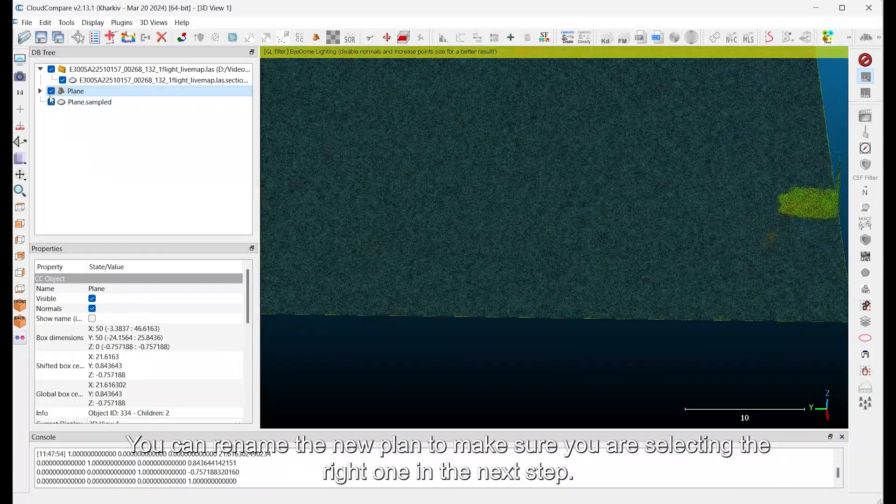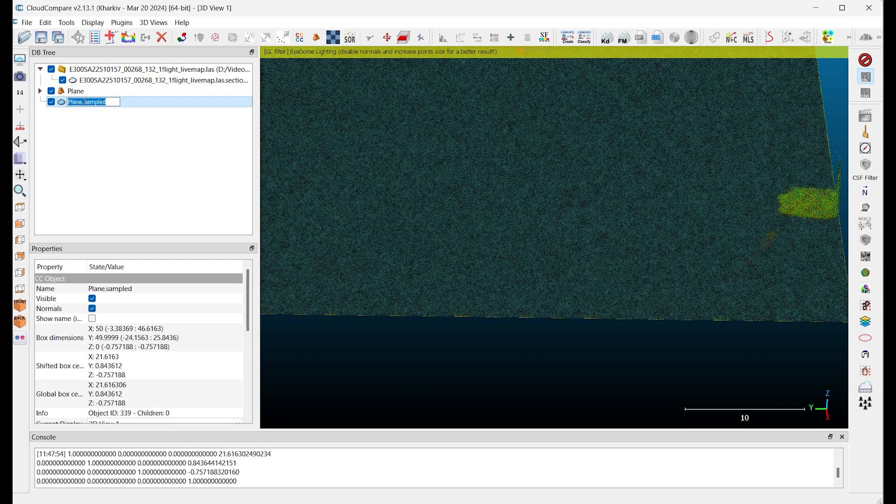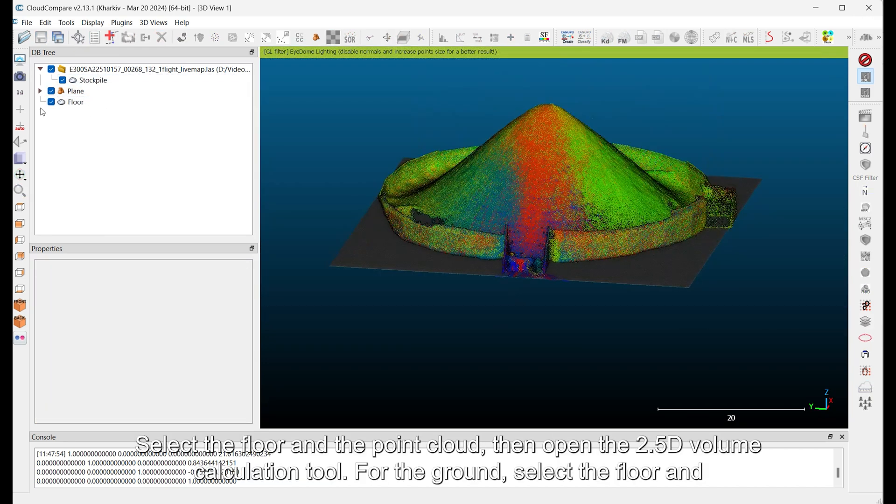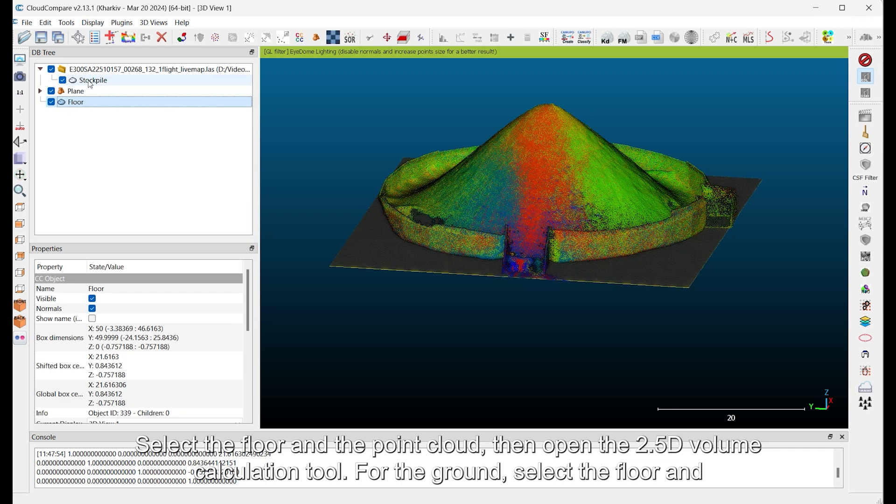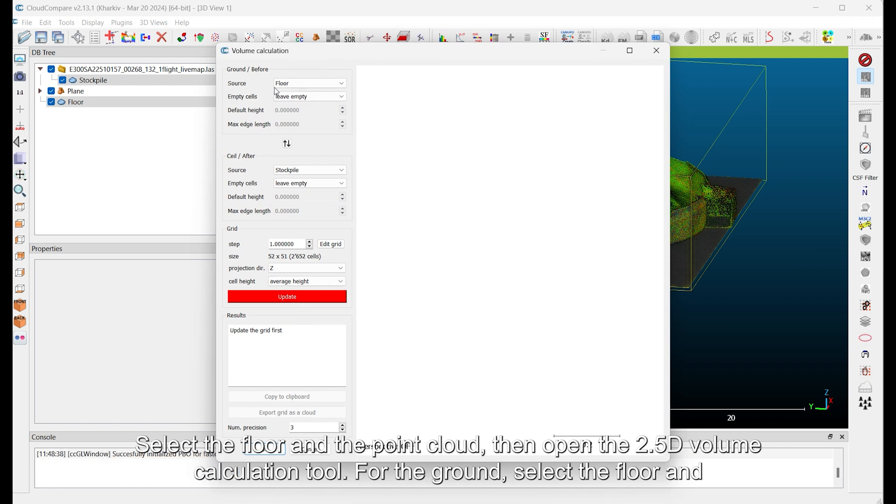You can rename the new plan to make sure you are selecting the right one in the next step. Select the floor and the point cloud, then open the 2.5 Volume Calculation tool.